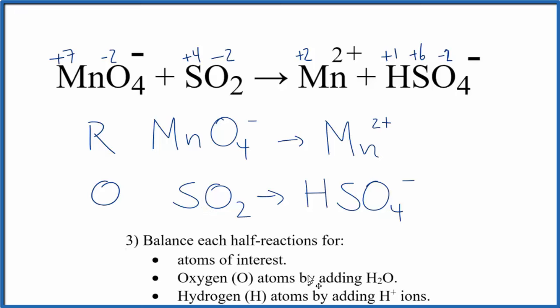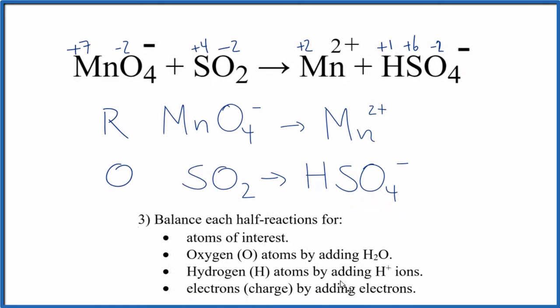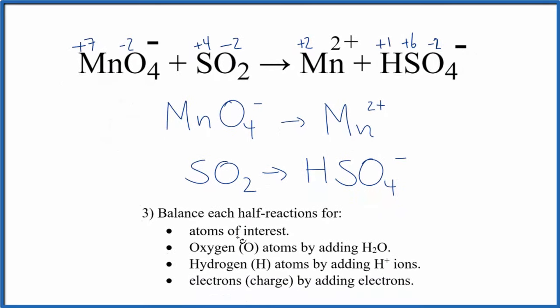At this point, we'll balance the half reactions using this set of steps here. So first we balance the atoms of interest, the ones that have changed. We have one manganese atom on both sides, one sulfur on both sides. Those are good.